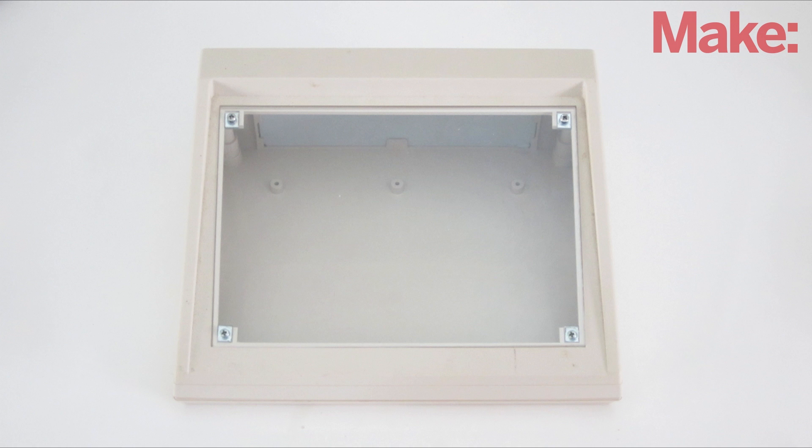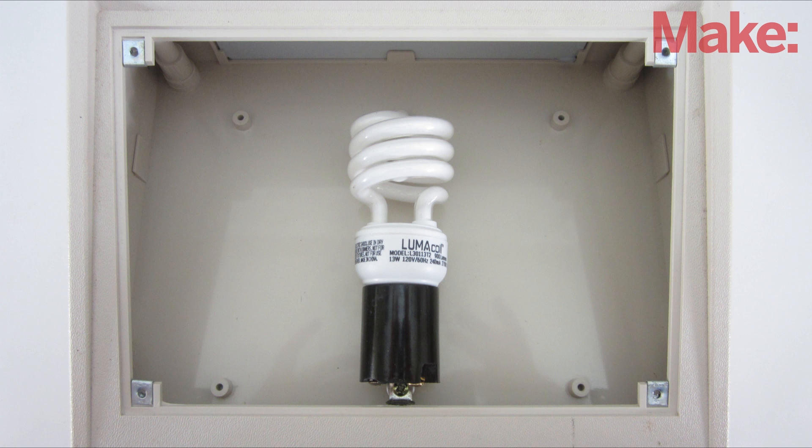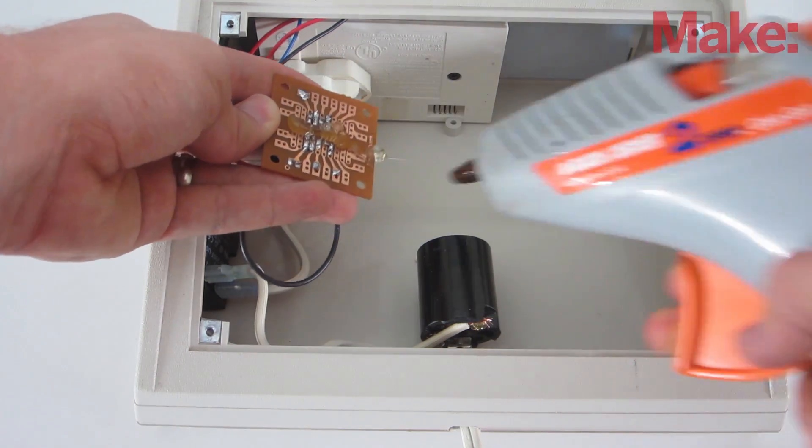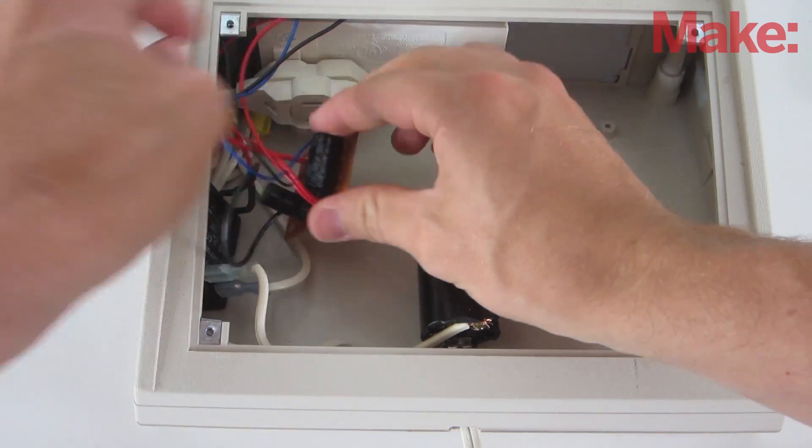Now all that's left is to mount the parts to the inside of the housing. First, I attached the light socket in the center of the housing. Then, I used hot glue to mount the rest of the components as far away from the light as possible.